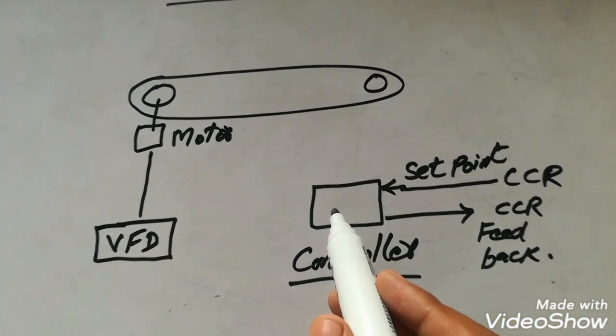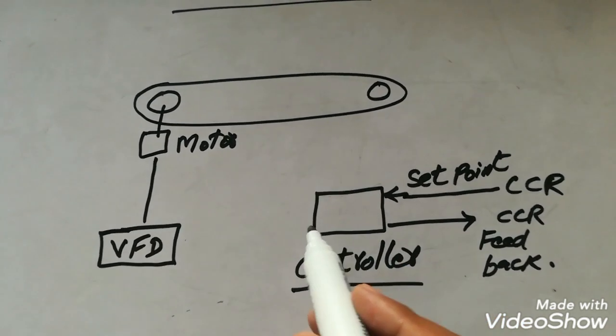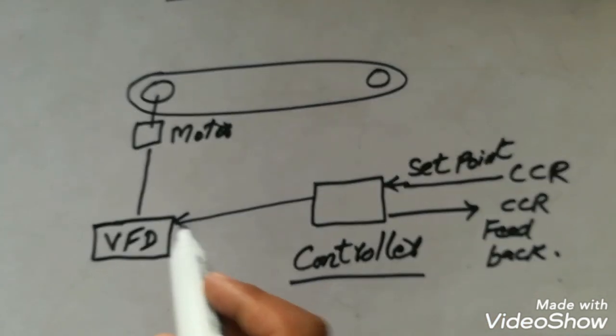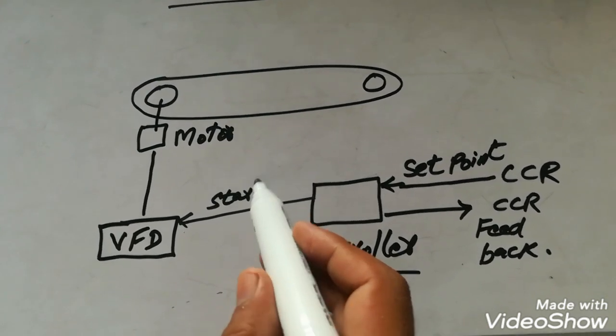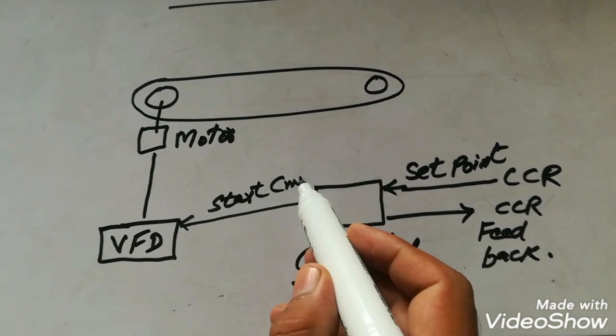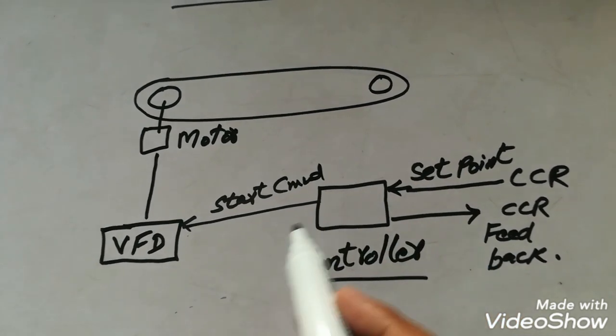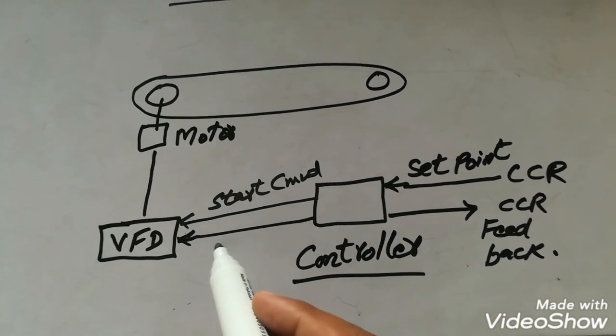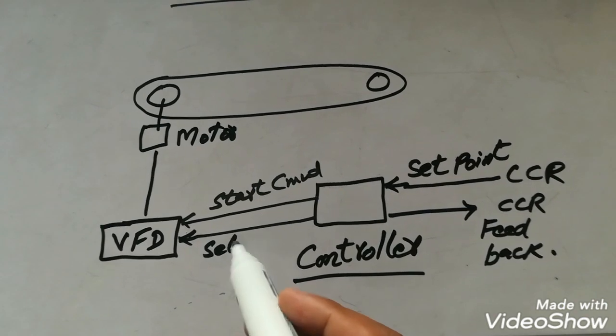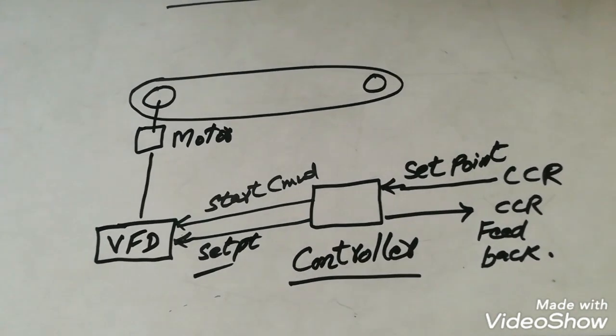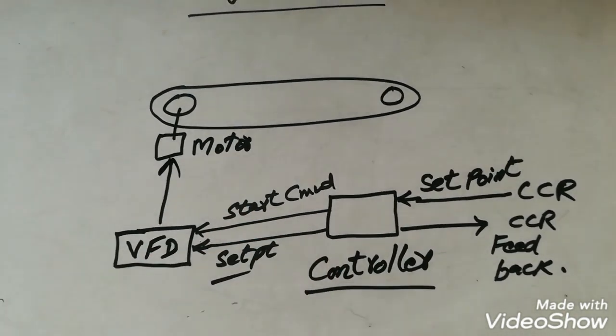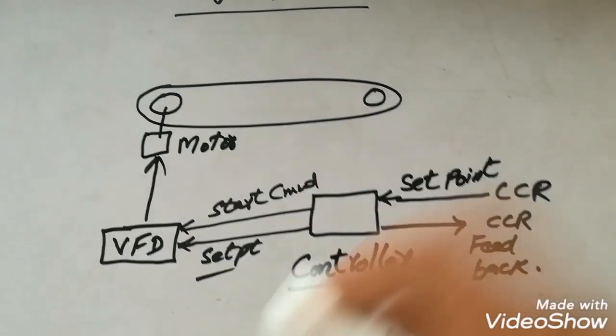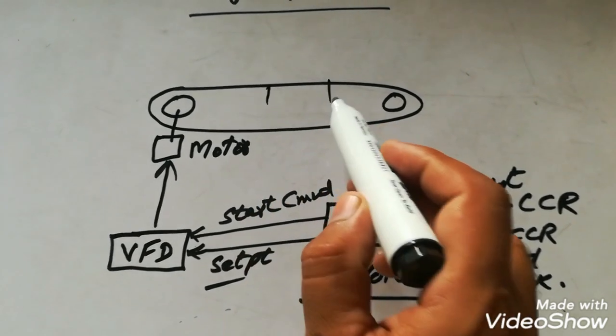If operator gives the set point to the controller, controller will give a start command which is a digital output and digital input of the VFD. It will start the VFD and also give an analog signal to the VFD which is 4 to 20 mA. It will control the speed of motor so motor will start running.